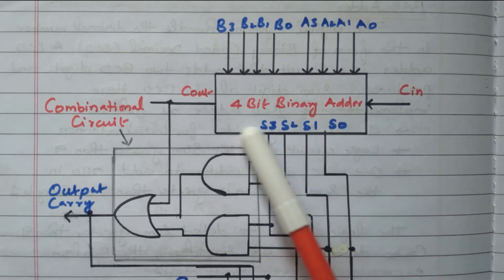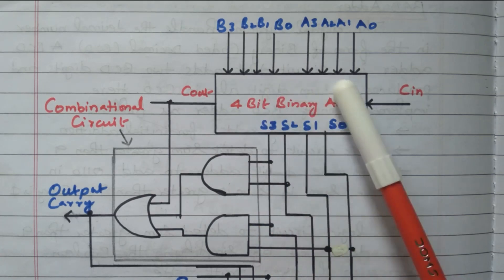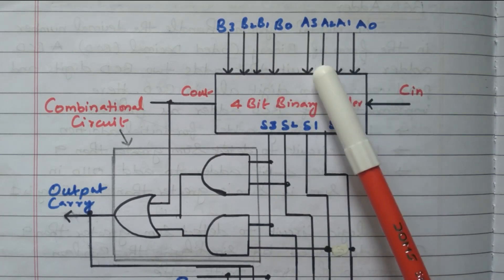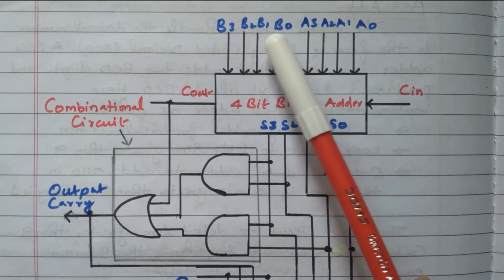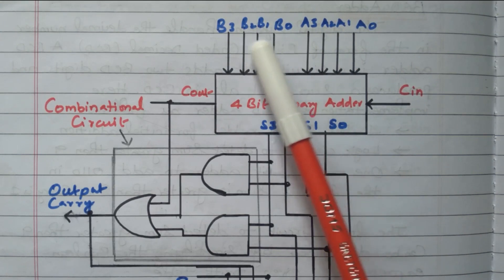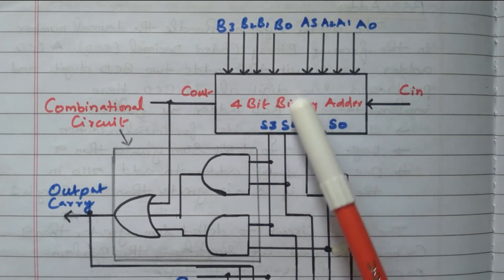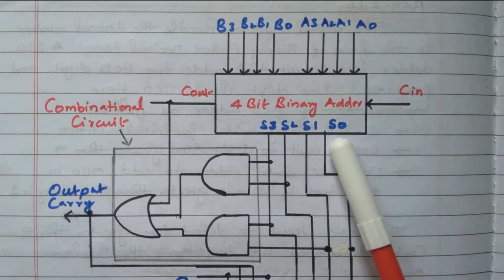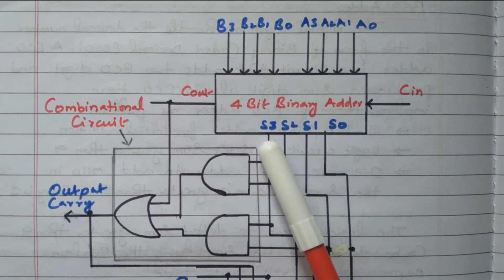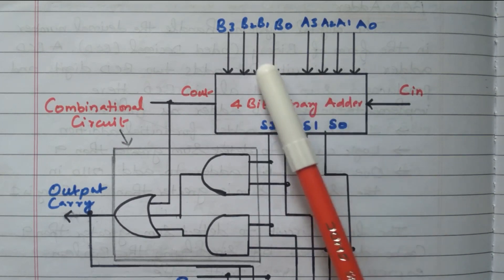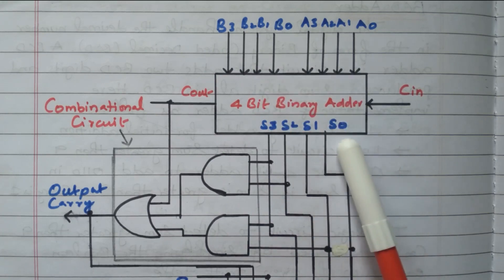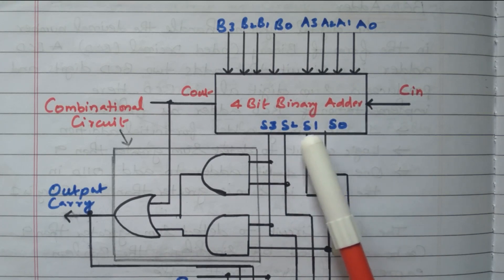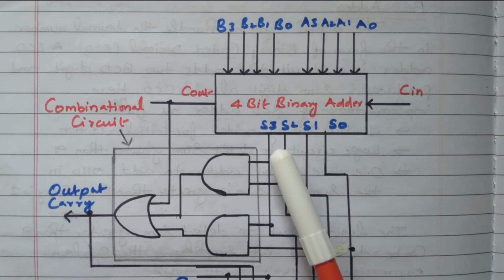Now we will see the adder. This is the 4-bit BCD adder. It will add two numbers — two BCD numbers. This is number 1 and this is number 2. A0, A1, A2, A3 are the four digits of the first number. B0, B1, B2, B3 are the four digits of the second number. These two numbers are added by the BCD adder. The carry in is given. The carry is also given. S0, S1, S2, S3 is the output — that is the addition of these two BCD numbers. We need to check whether this output S0, S1, S2, S3 is greater than nine or less than nine.